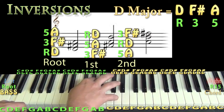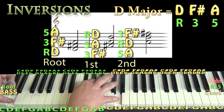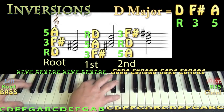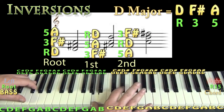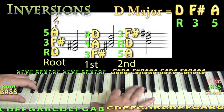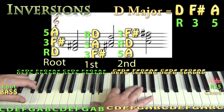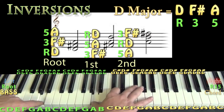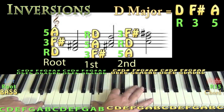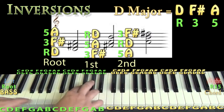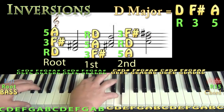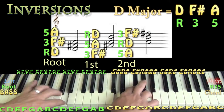For a true first inversion you'd have F sharp in the bass. Then from there, playing A, D, F sharp is second inversion — five, root, three. That happens quite a bit in the tune for some of the D major chords. Just by itself it's cool to get used to those shapes moving around: root position, first inversion, second inversion, back to root position.